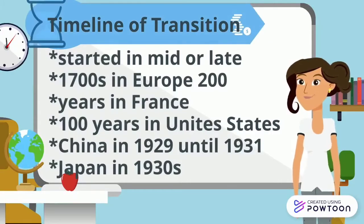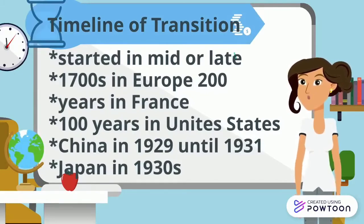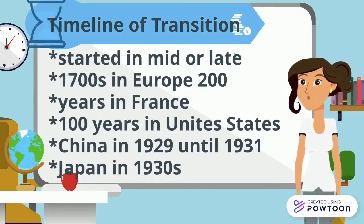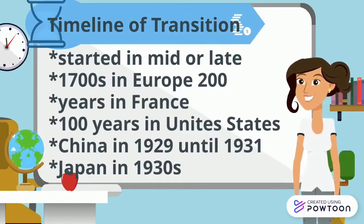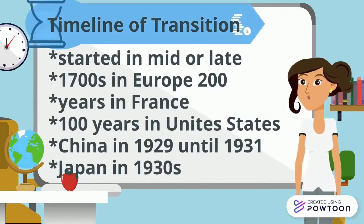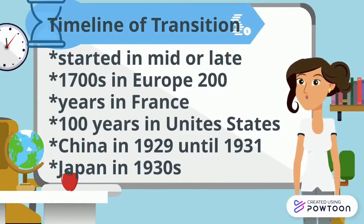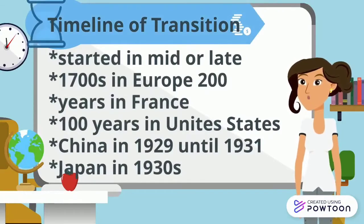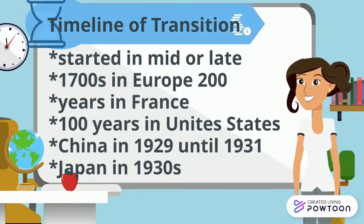The transition started in mid or late 1700s in Europe. During that time, death rates and fertility began to decline. High to low level fertility happened over 200 years in France and 100 years in the United States. In other parts of the world, the transition began later. It was only in the 20th century that mortality declined in Africa and Asia, with the exception of Japan. According to Madison in 2001, life expectancy was only 24 years in the early 20th century, while the same life expectancy occurred in China in 1929 until 1931.